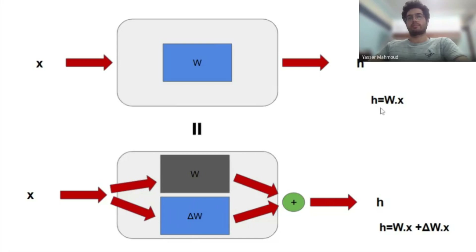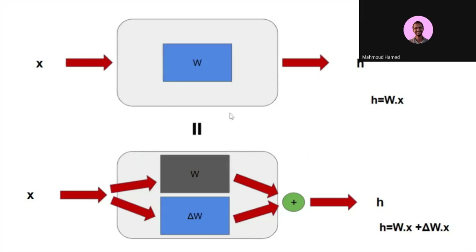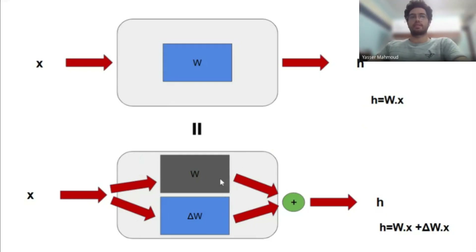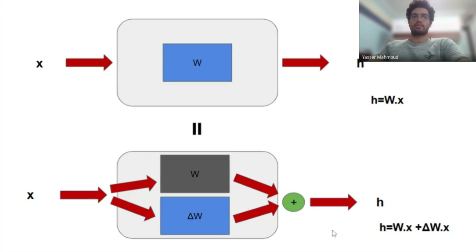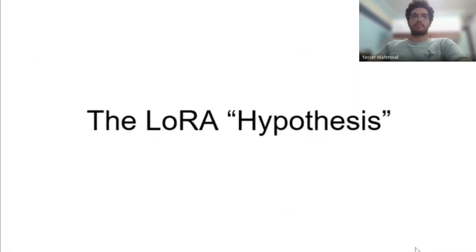Looking at the forward pass, you can see the difference between the two perspectives. They're mathematically equivalent. However, they're not computationally equivalent — in fact, the second formulation is less efficient because you're doing additional computation. So this might seem useless: why would anyone want to do this? It adds more latency and there seems to be no point — or is there? That's where LoRA comes in.